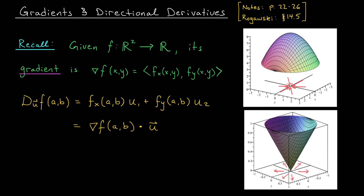In our last video, we saw a couple of examples where we computed the gradient del f and plotted the gradient vectors alongside the graph of our function. We noticed some really unusual behavior. In the case of a downward opening paraboloid, the gradients were all pointing us back toward the origin. But with an upward opening cone, the gradients were pointing us away from the origin. Why would this be the case? It turns out it's explainable, and it comes from a deep connection between gradient vectors and directional derivatives.